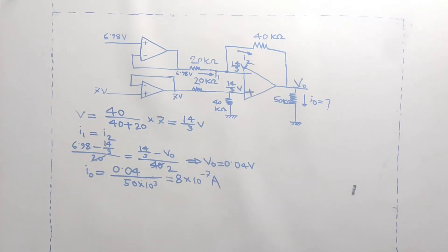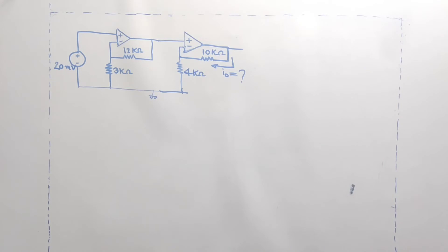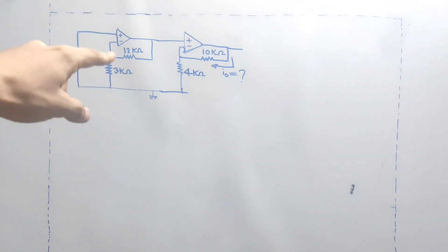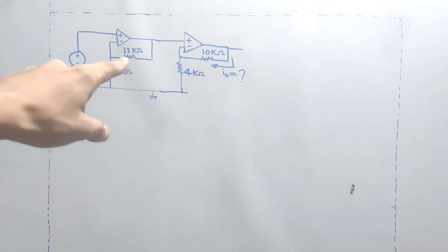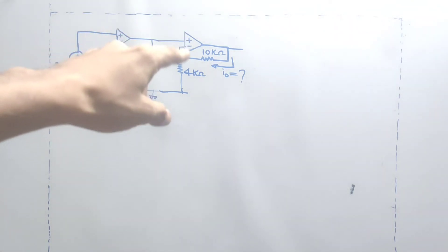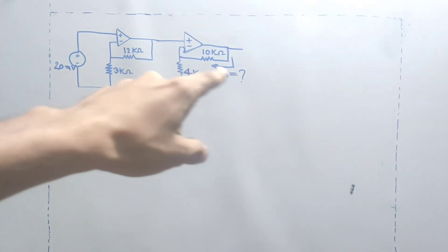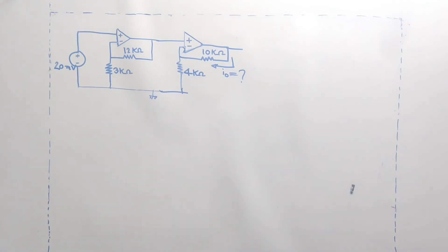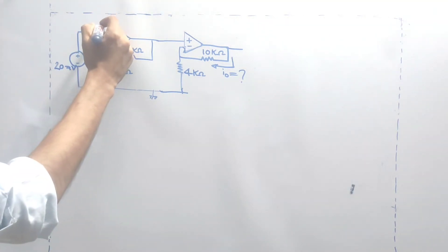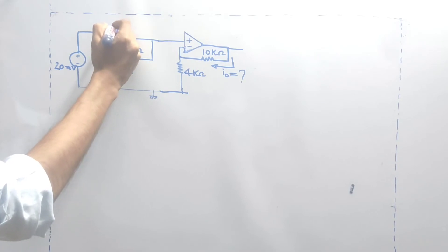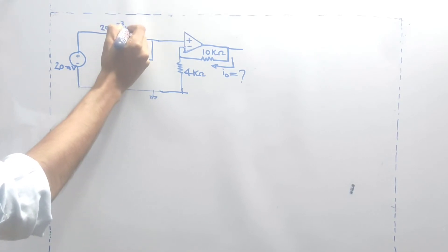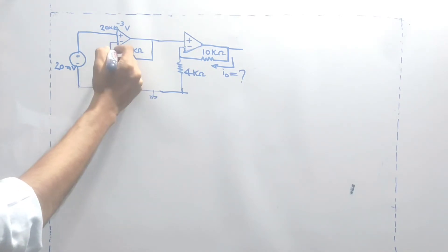This is the last problem. We have to solve it. For our problem, we need to get 120 mV. This is a high-degree circuit. Now it's minus 1 plus the second point minus again. So it has to be 20 into 10 inverse minus the other one over the higher relative — 20 x 10 inverse 3.